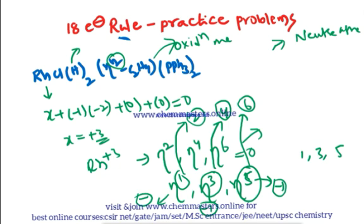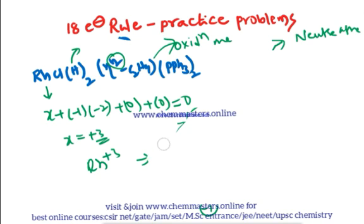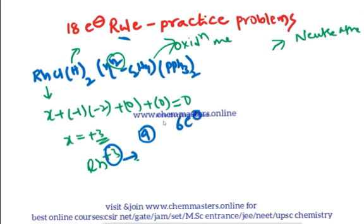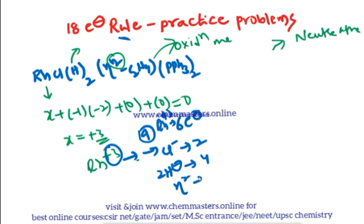Counting electrons for the rhodium complex using the oxidation state method: Rh belongs to the cobalt group (9 electrons neutral), but in the +3 state it contributes 6 electrons. Cl⁻ contributes 2 electrons; two hydrides contribute 4 electrons; η²-C₂H₄ contributes 2 electrons; two triphenylphosphine ligands contribute 4 electrons. Total: 6 + 2 + 4 + 2 + 4 = 18 electrons.